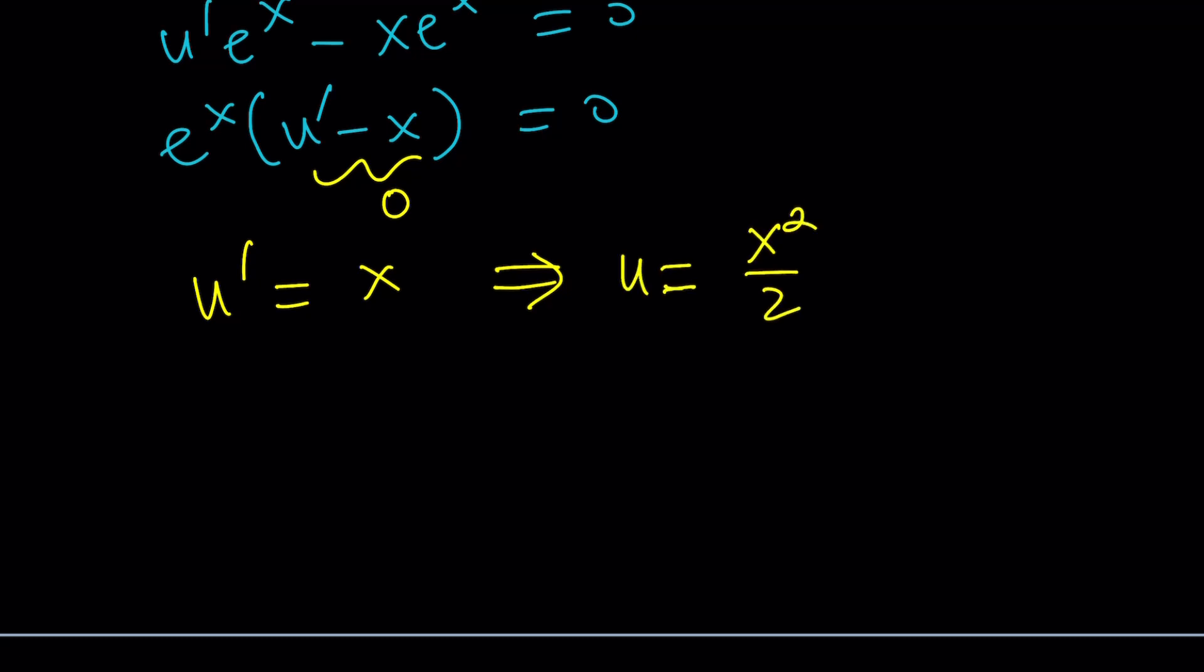Now, do we need to add a constant? Well, it depends. But yes, in this case, let's just add it. And I could probably just use c sub two because I already used c sub one. This is my u.